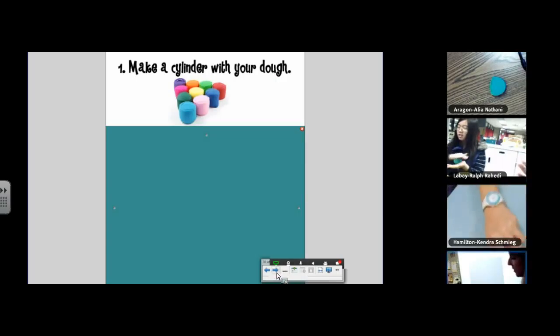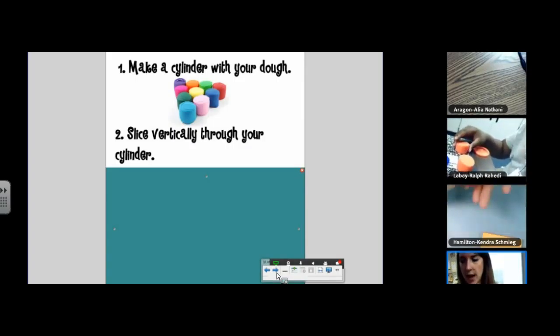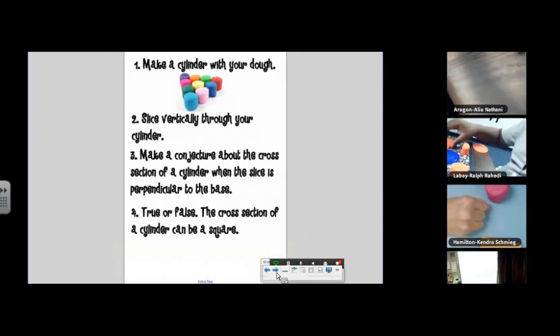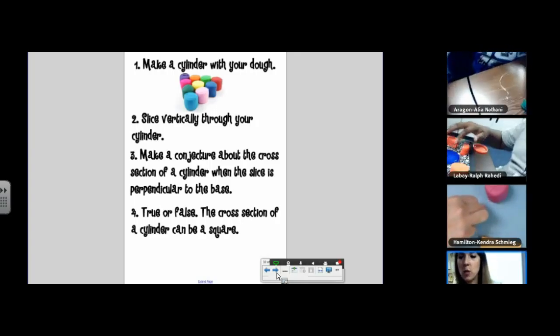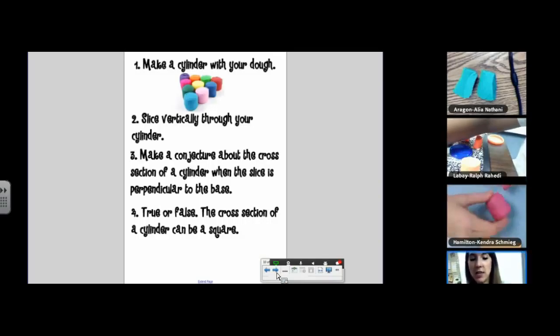We still have a cylinder. Still have a cylinder, and go ahead and slice vertically through your cylinder and show the camera. So let's say a sentence. If I slice a cylinder perpendicular to its base, then my cross-section is a rectangle. True or false? The cross-section of a cylinder can be a square. Hmm. The cross-section of a cylinder could be a square. Who could tell me the exact situation when the cross-section of a cylinder is a square? This is a good one.